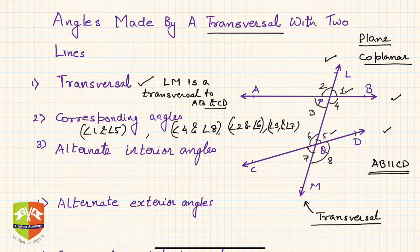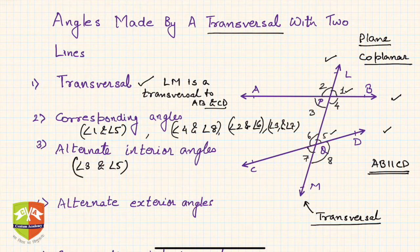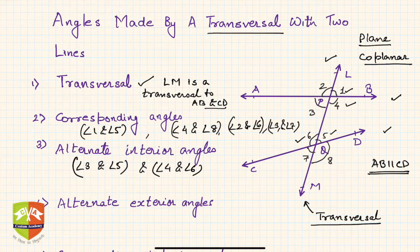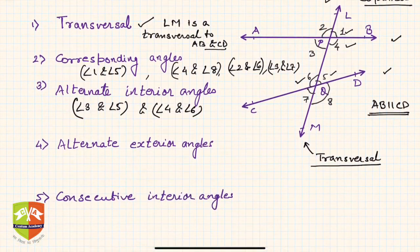Alternate interior angles are angles between the two lines and on opposite sides of the transversal. For example, angle 3 and angle 5 are on opposite sides of the transversal and are made between the two lines — they are alternate interior angles. Similarly, angle 4 and angle 6 are alternate interior angles. AB forms one arm of angle 4, CD forms one arm of angle 6, and the transversal PQ is a common arm.